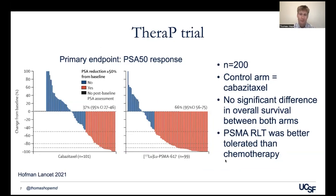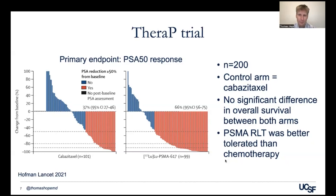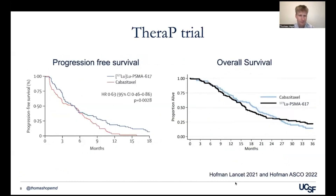The primary endpoint was a PSA-50 response — the PSA falling by at least 50%. The use of lutetium PSMA-617 resulted in nearly a doubling of the percent of patients whose PSA fell by 50%. But interestingly, there was no significant difference in overall survival between both arms — people didn't live longer even though their PSA fell more. You can see progression-free survival benefit, particularly the tail out at the outer months, with prolonged progression-free survival. But in terms of overall survival, there's actually no difference between cabazitaxel and lutetium PSMA-617.